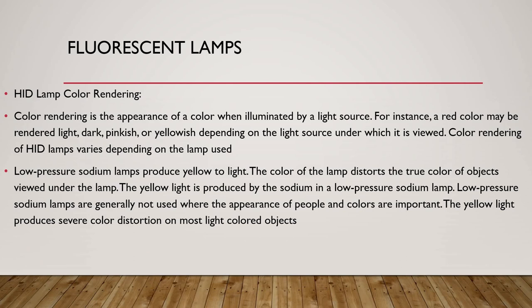HID lamps color rendering: color rendering is the appearance of a color when illuminated by a light source. For instance, a red color may be rendered light, dark, pinkish, or yellowish depending on the light source under which it is viewed. Color rendering of HID lamps varies depending on the lamp used. Low pressure sodium lamps produce a yellow-orange light that distorts the true colors of objects viewed under the lamp. Low pressure sodium lamps are generally not used where the appearance of people and colors are important. The yellow light produces severe color saturation on most light-colored objects.